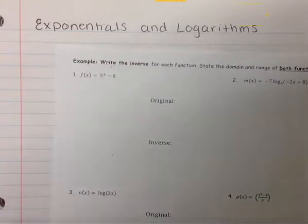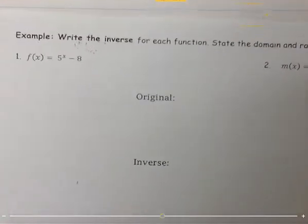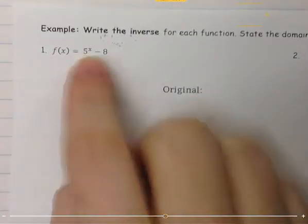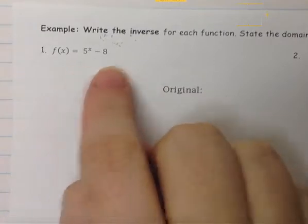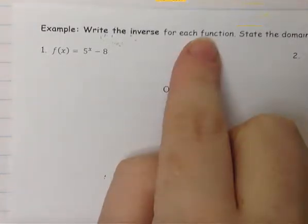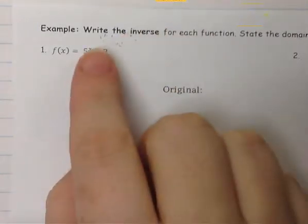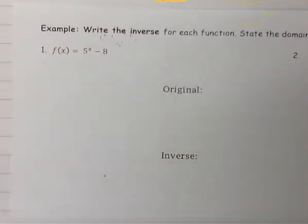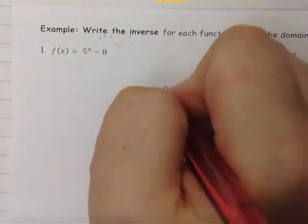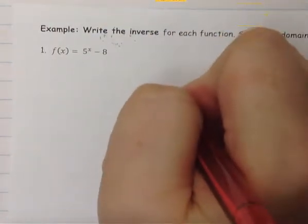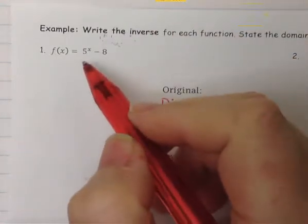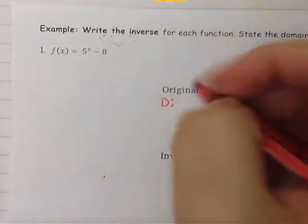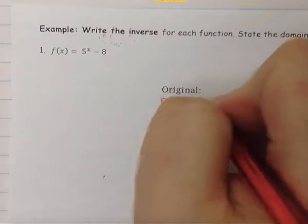This first example is an exponential. An exponential goes left and right forever, but it has an asymptote at the k value. Our domain for this original exponential, since it is an exponential, goes left and right forever — so it will be negative infinity to positive infinity.